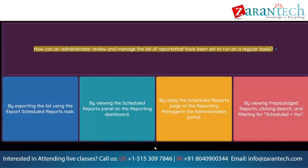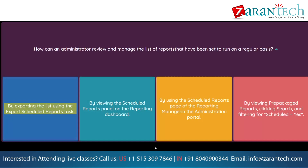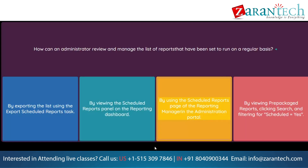Question: How can an administrator review and manage the list of reports that have been set to run on a regular basis? Option 1: By exporting the list using the Export Scheduled Reports task. Option 2: By viewing the Scheduled Reports panel on the Reporting Dashboard. Option 3: By using the Scheduled Reports page of the Reporting Manager in the Administration Portal. Option 4: By viewing pre-packaged reports, clicking Search, and filtering for Scheduled equals Yes.